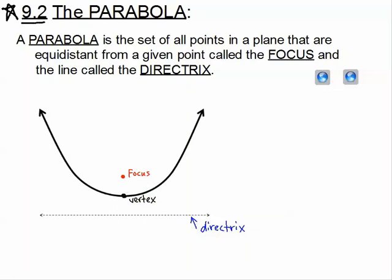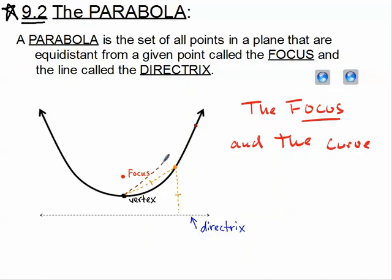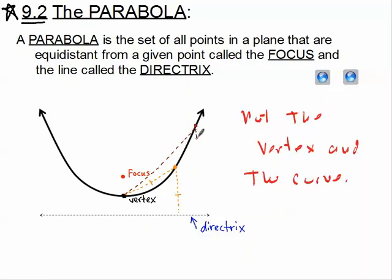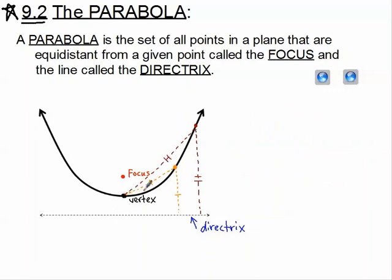If you think about any other point on this parabola, for example, let's say this point right here—this point is exactly the same distance from the focus as it is to the directrix. And if you pick a point all the way up here, again, just as a quick visual, that point is the same exact distance from the focus as it is from the directrix. So the collection of all the points that are exactly the same distance from the focus and the directrix would be our parabola.